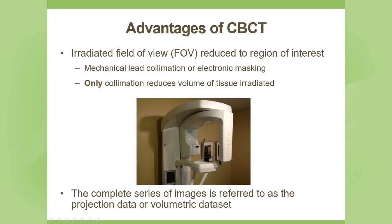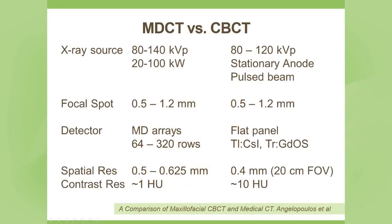The advantages of cone beam CT include that the irradiated field of view is reduced to the region of interest. Mechanical collimation — squeezing down the X-ray field size to the area of interest with lead apertures controlled by the operator — is the only way to reduce the volume of tissue irradiated. Comparing multi-detector CT versus cone beam CT, the X-ray source power is higher in multi-detector CT, the detector types differ (a multi-detector array versus a flat panel), and spatial resolution is comparable at less than half a millimeter.